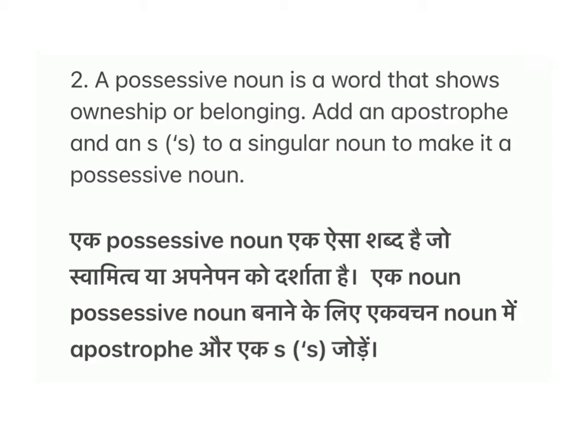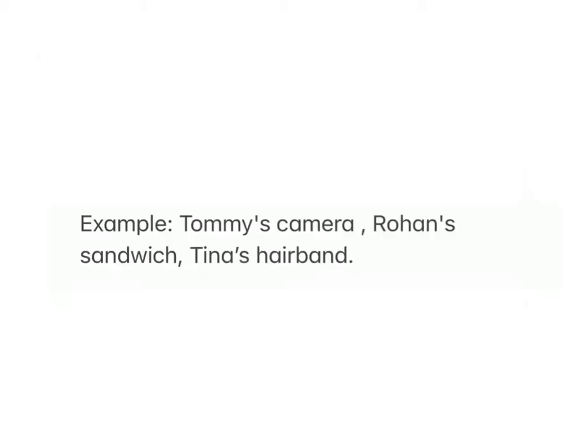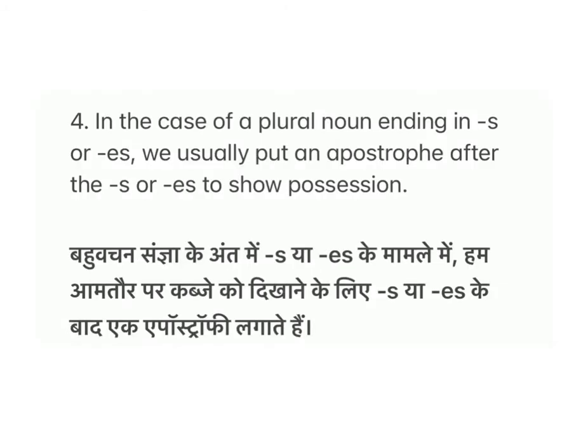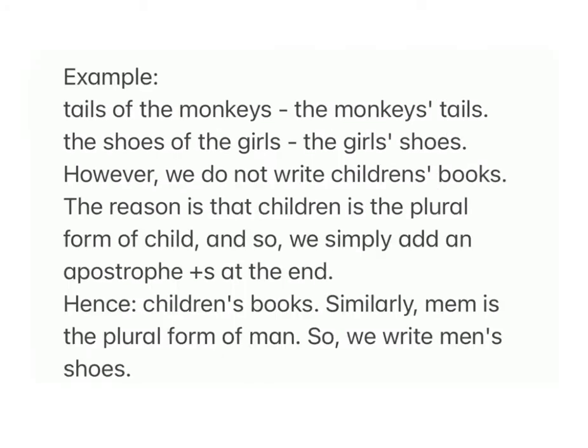Number 2: A possessive noun is a word that shows ownership or belonging. Add an apostrophe and an 's' to a singular noun to make it a possessive noun. Example: Thomas's camera, Roma's sandwich, Tina's hair band. In the case of a plural noun ending in 's' or 'es', we usually put an apostrophe after the 's' or 'es' to show possession.